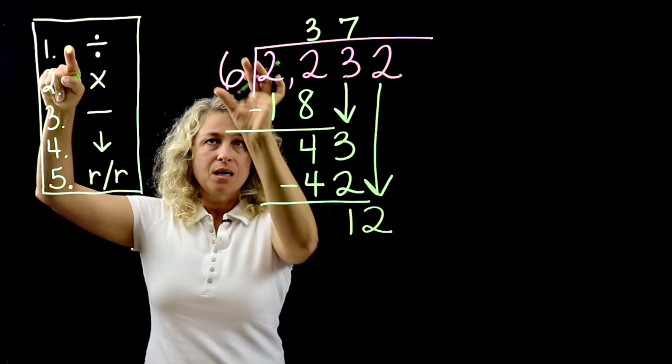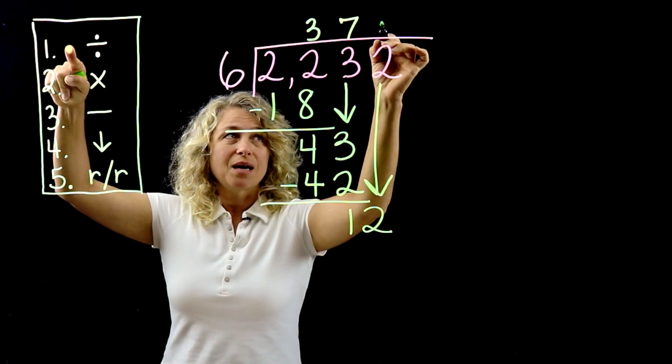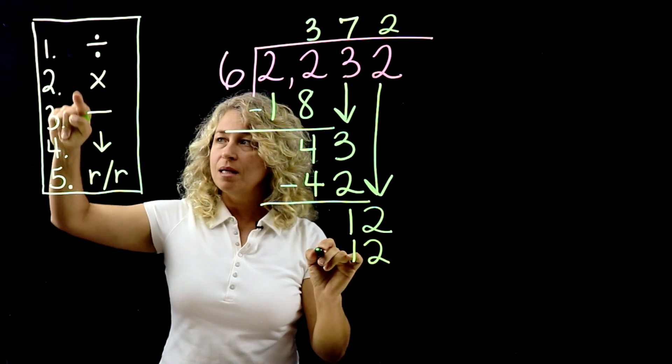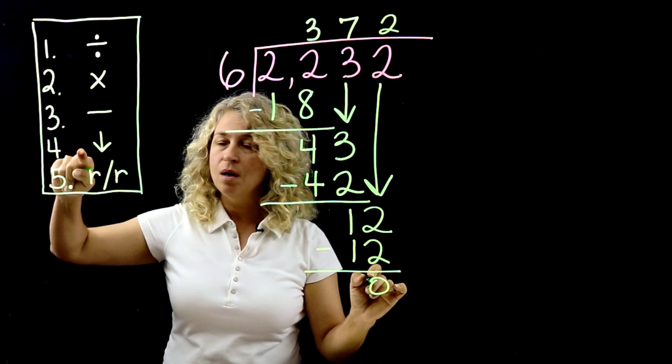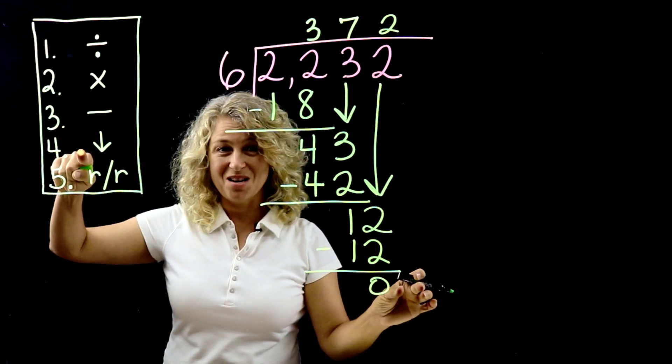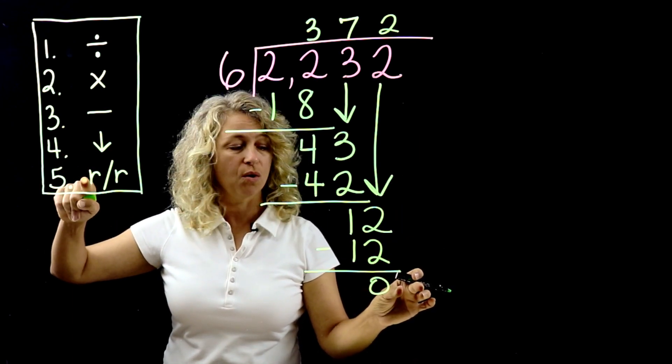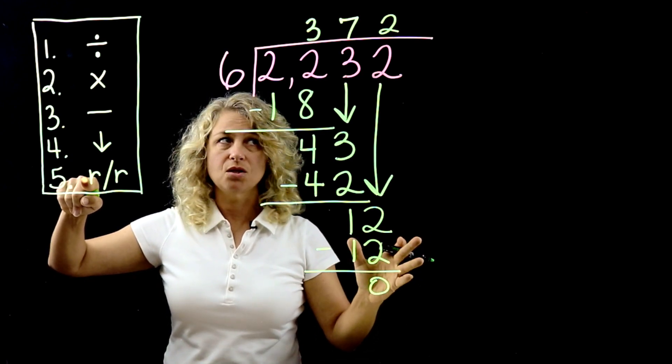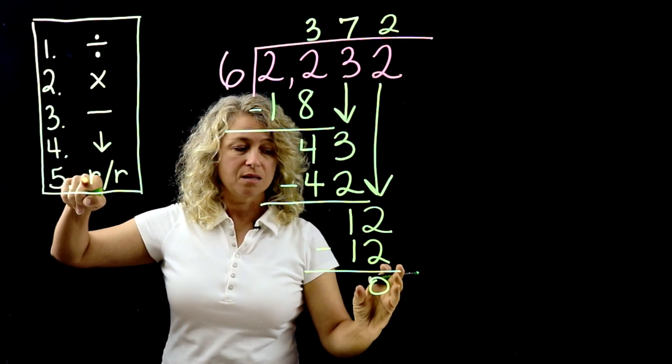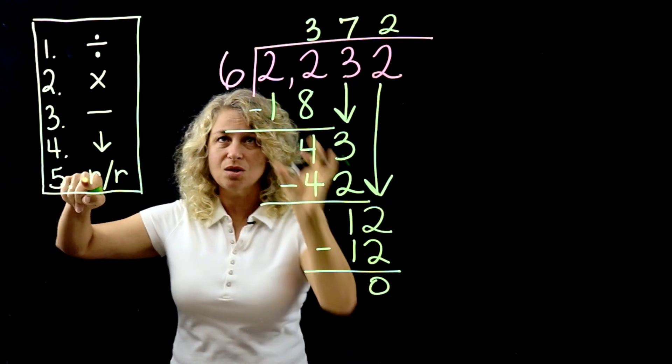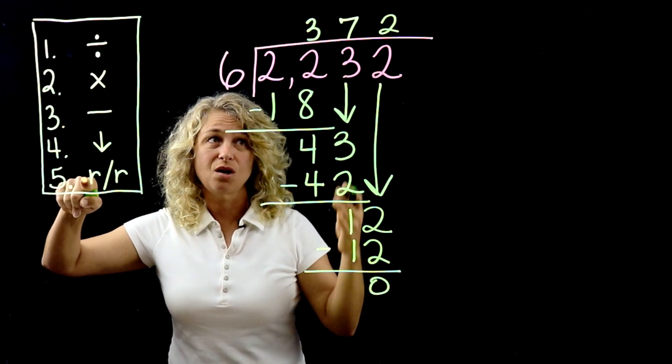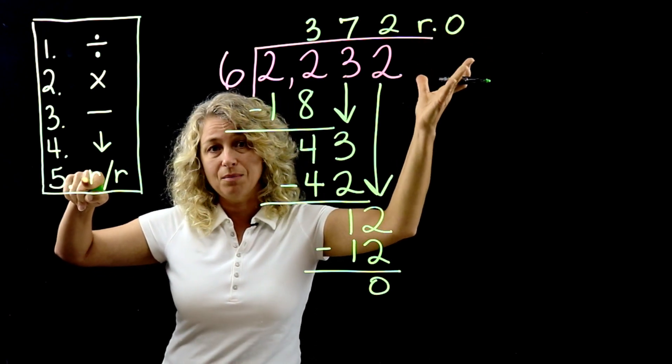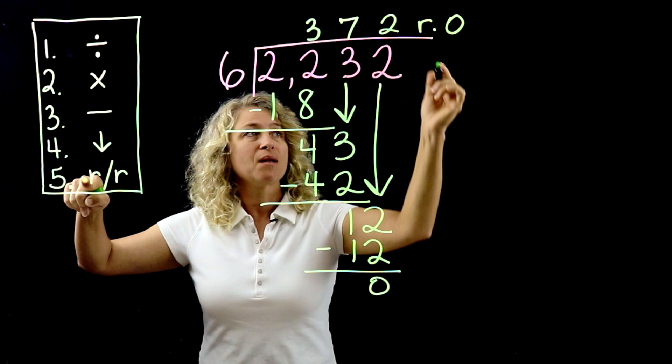How many times will 6 fit into 12? 2 times. So we're multiplying 2 times 6 is 12, and subtract, get 0. Is there any other numbers to bring down? No. And so here we are at the end. Repeat or remainder? Well, there's nothing to, we're finished. There's a number above each number and the answer we have here is smaller than the divisor. And when you end with 0, you know it's divided evenly, so there's no reason to put remainder 0. You can, but it really doesn't make any difference. So you can just leave that off. Your quotient is 372.